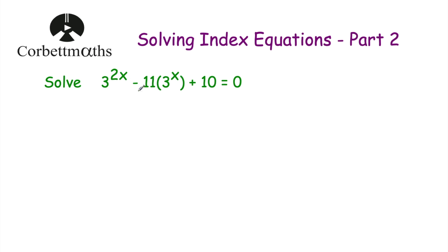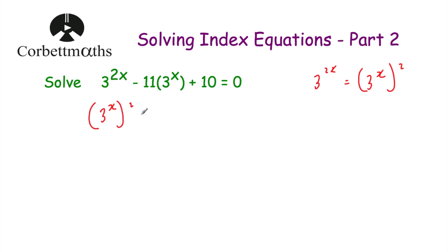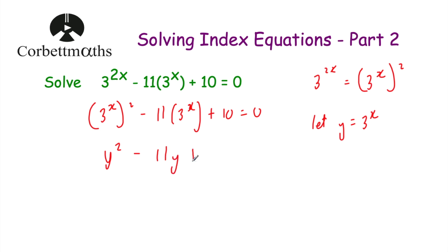Here's our next question: solve 3 to the power of 2x subtract 11 times 3 to the power of x plus 10 equals 0. We start by looking at the first term: 3 to the power of 2x. Using our laws of indices, we can write that as 3 to the power of x, all squared, because this is a power of a power — multiply the powers together. So we rewrite the equation as 3 to the power of x, all squared, subtract 11 times 3 to the power of x, plus 10 equals 0.